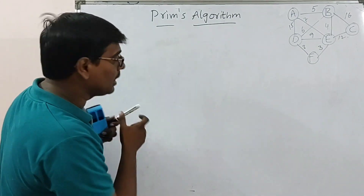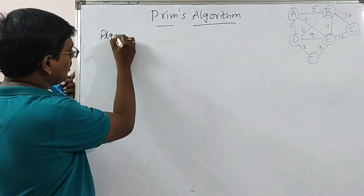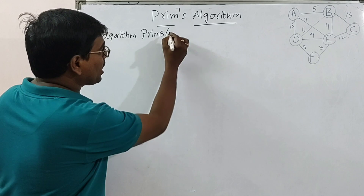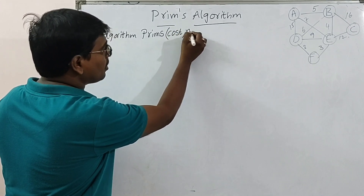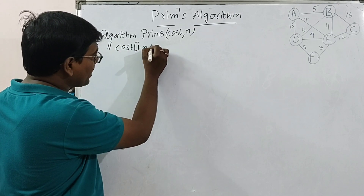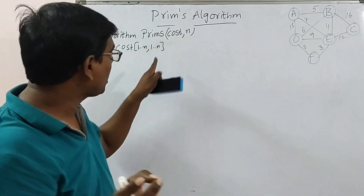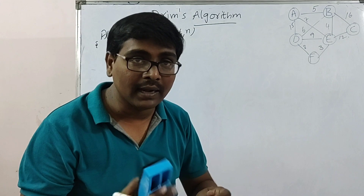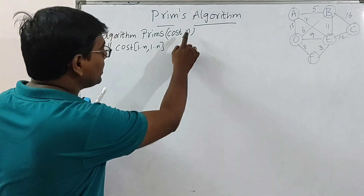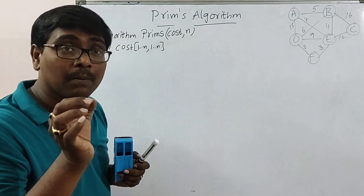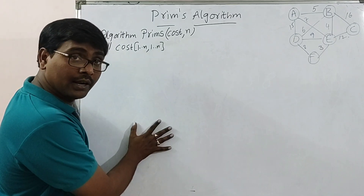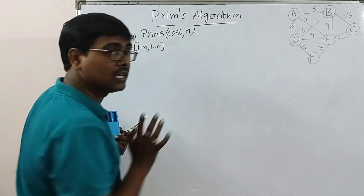In this session we are using Prim's Algorithm to directly find out the minimum cost spanning tree. Coming to the algorithm — it has two parameters: Cost and N. Cost is a two-dimensional array, Cost[1 to N][1 to N], simply a matrix that stores weights of all the edges. N specifies the number of vertices. I will write down the algorithm along with an explanation of an example.